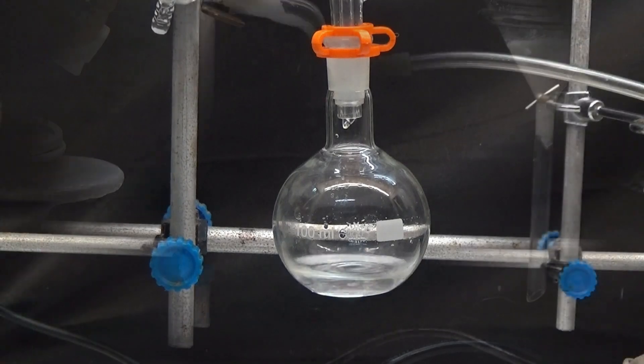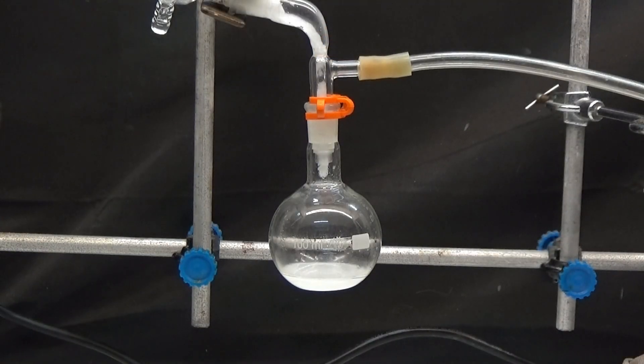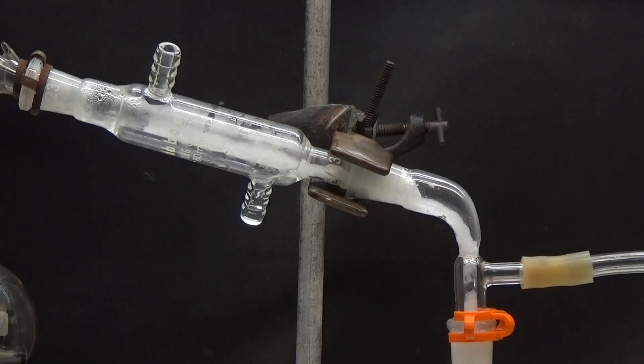During distillation, a white solid crystallizes in the condenser, which could potentially clog it. We have stopped the distillation and verified that the solid that crystallizes in the condenser can either be monoethyl phthalate or unreacted phthalic anhydride.